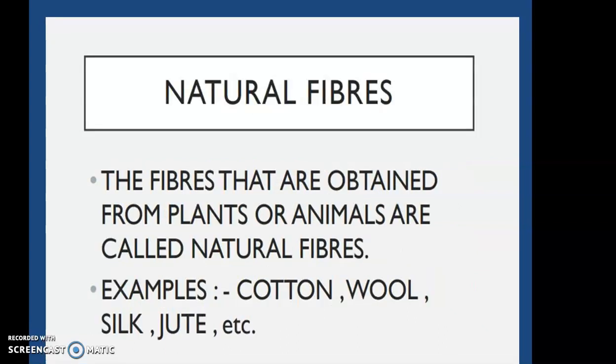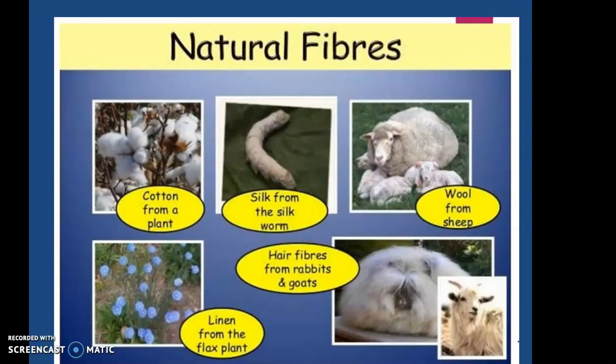The fibers obtained from plant or animal sources are called natural fibers. From plant sources we get cotton, jute, and linen from the flax plant. From animal sources we get silk from silkworms, wool, and fibers from the angora rabbit and angora goat, as you learned in class 7th. After processing, spinning, and weaving, we get proper fibers woven into fabric.